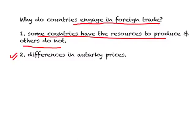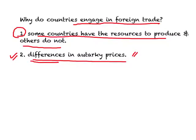The second reason is that there could be differences in autarky prices. Autarky simply refers to a situation of no trade. A good may be produced at a higher price in one country and at a lower price in another. Theoretical trade models explain why we have these differences in autarky prices, and differences in autarky prices become the basis for foreign trade.